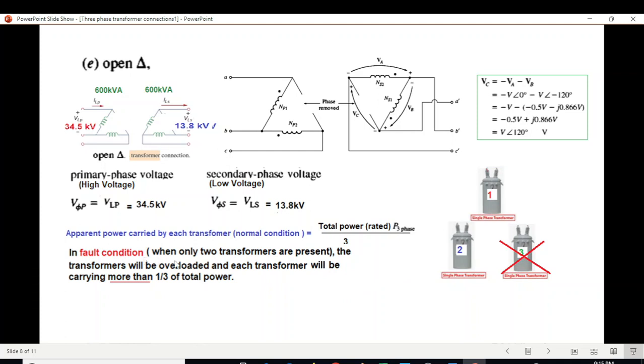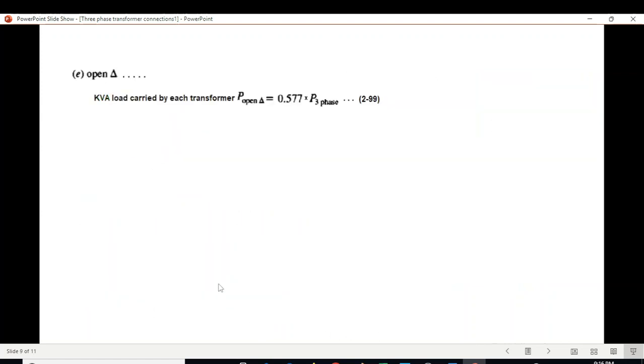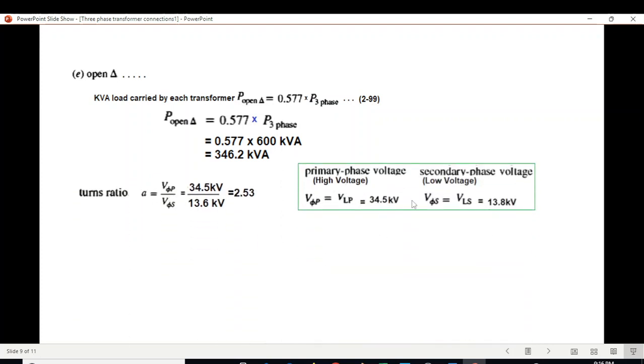For apparent power, we need to consider that in fault condition when only two transformers are present, the transformers will be overloaded and each transformer will be carrying more than one-third of the total power. The formula is: load carried by each transformer equals 0.577 multiplied by the three-phase total power which is 600. So we calculate 0.577 times 600 kVA gives us 346.2 kVA for each transformer. We can calculate turn ratio using the V_primary and V_secondary we already calculated.